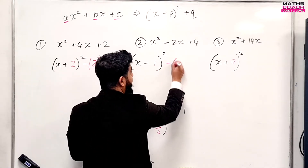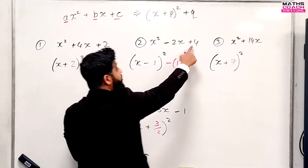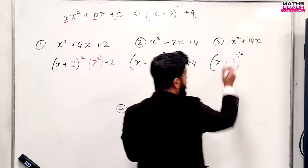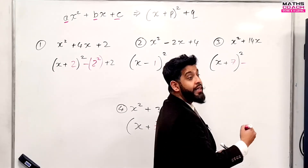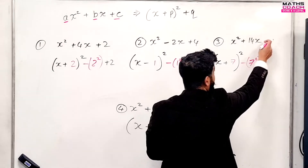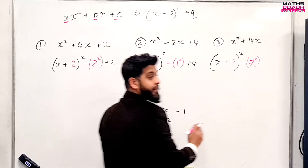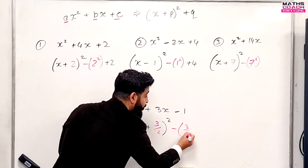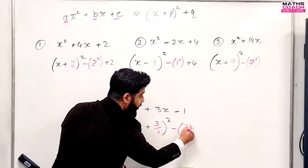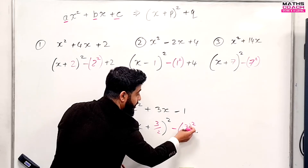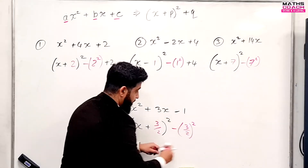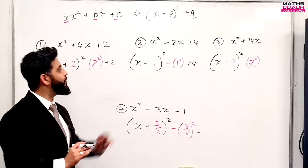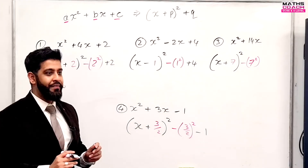For the second expression you had a B value of one in the bracket, so you're going to take away one squared. And what was already there was a plus four. For the third, you take away seven squared and there was nothing else there, so leave that blank. For the fourth, you take away three over two squared — that square is placed outside because it affects both numerator and denominator — and what was already there was minus one.